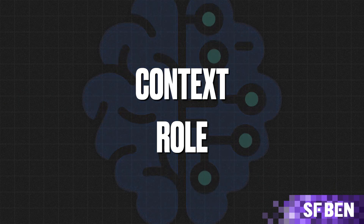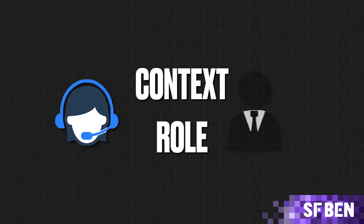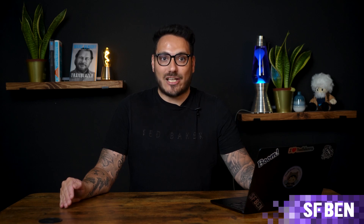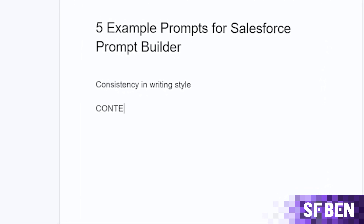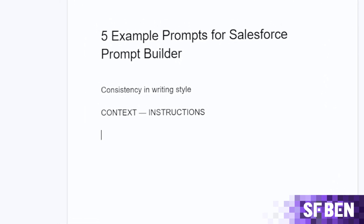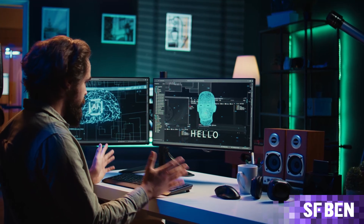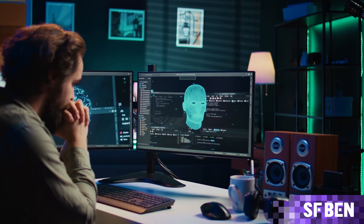Effective prompts set a specific context or role for the AI model, such as acting as a customer support agent or a marketing executive. To create the best prompts, experimenting with different styles and gathering user feedback is essential. Consistency in writing style and clearly separating context from instructions ensures reliable responses. By following these guidelines, admins can leverage AI to improve workflows and customer interactions.